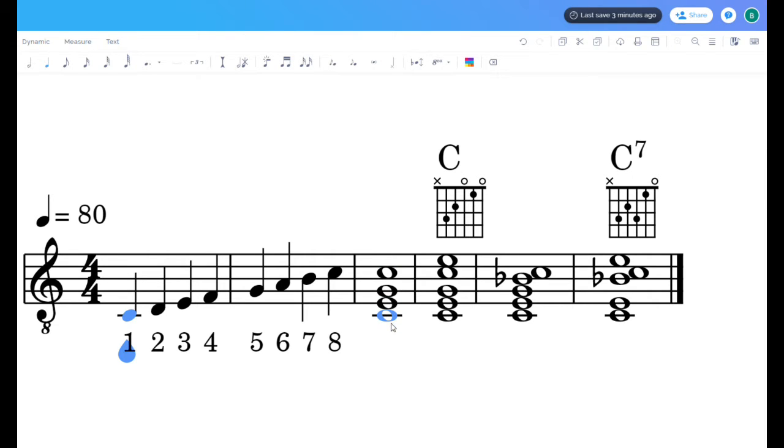A major triad is called a 1, 3, 5, 8. I'm not going to get into all the theory about minors and diminished, augmented, and all that stuff like that. Just major for right now.